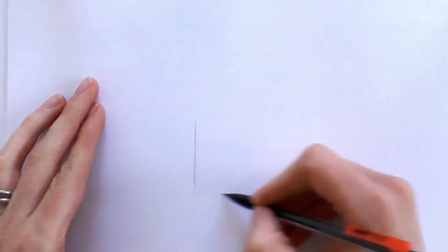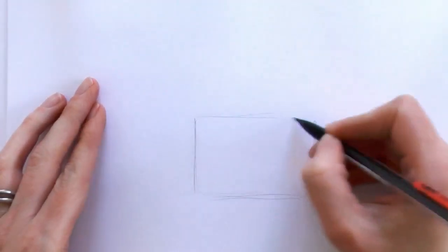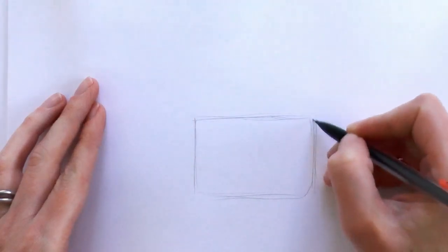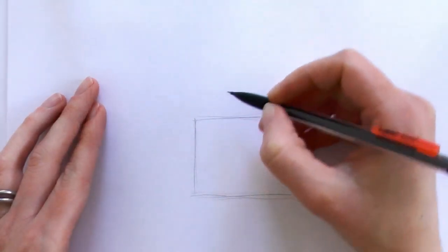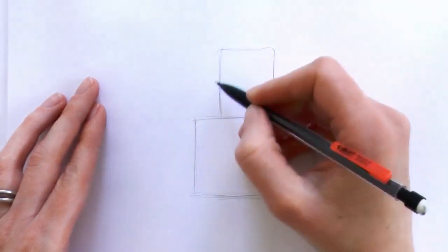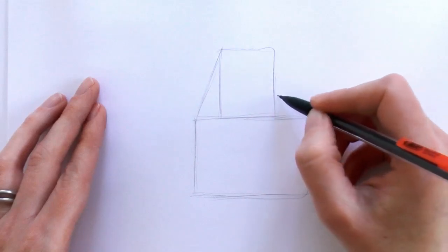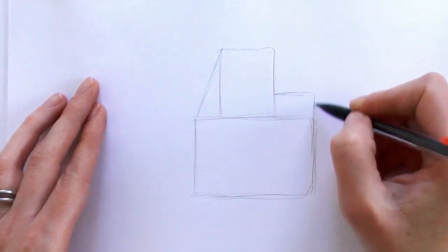First up what we do is we draw a rectangle. And then we draw another rectangle. And then a triangle connecting the two rectangles. And then another little rectangle out the back.